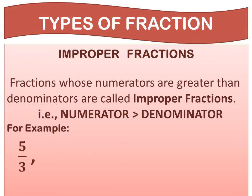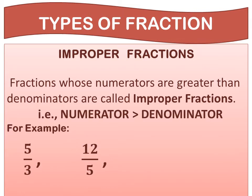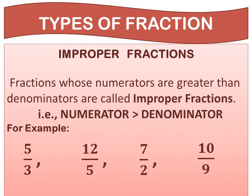For example of improper fractions: 5 upon 3, 2 upon 5, 7 upon 2, and 10 upon 9. In each case, the numerators are greater than the denominators.